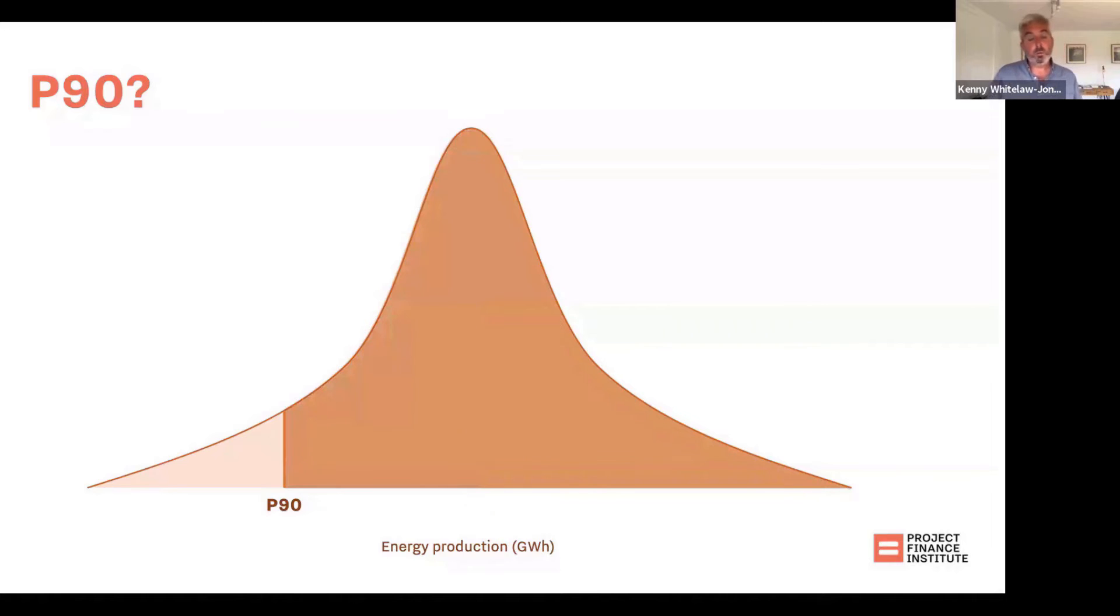So what we want to be looking at here is, if we have these different levels of energy production—P50, P90, and so on—how can we use Excel's normal distribution functions to manipulate that data? That's the focus of what I'm going to be talking about here.